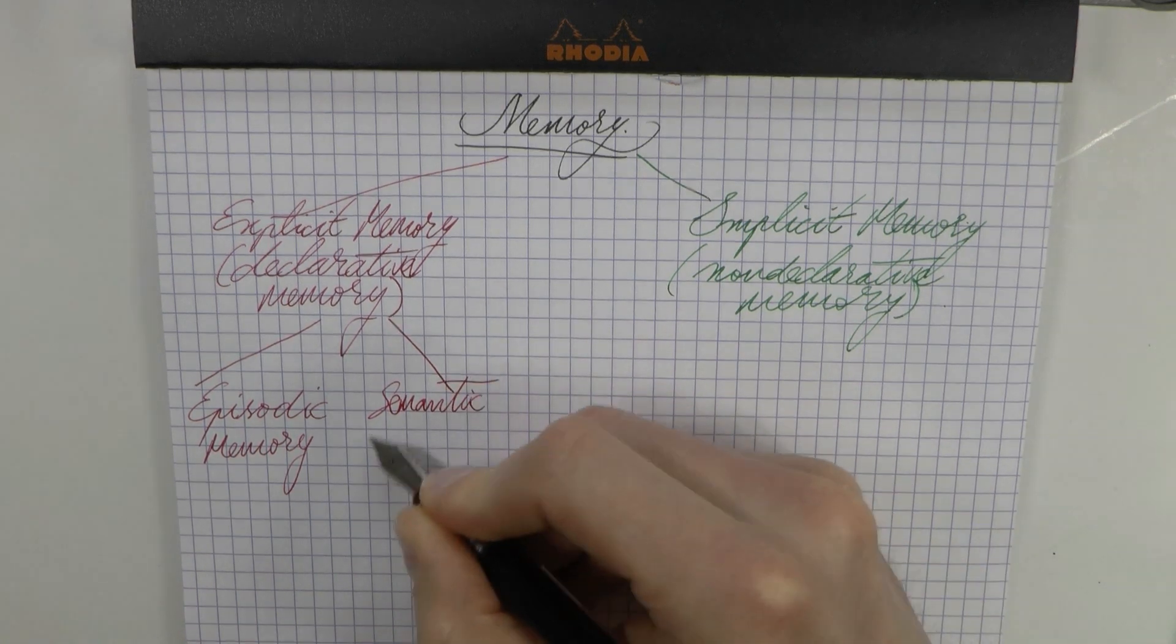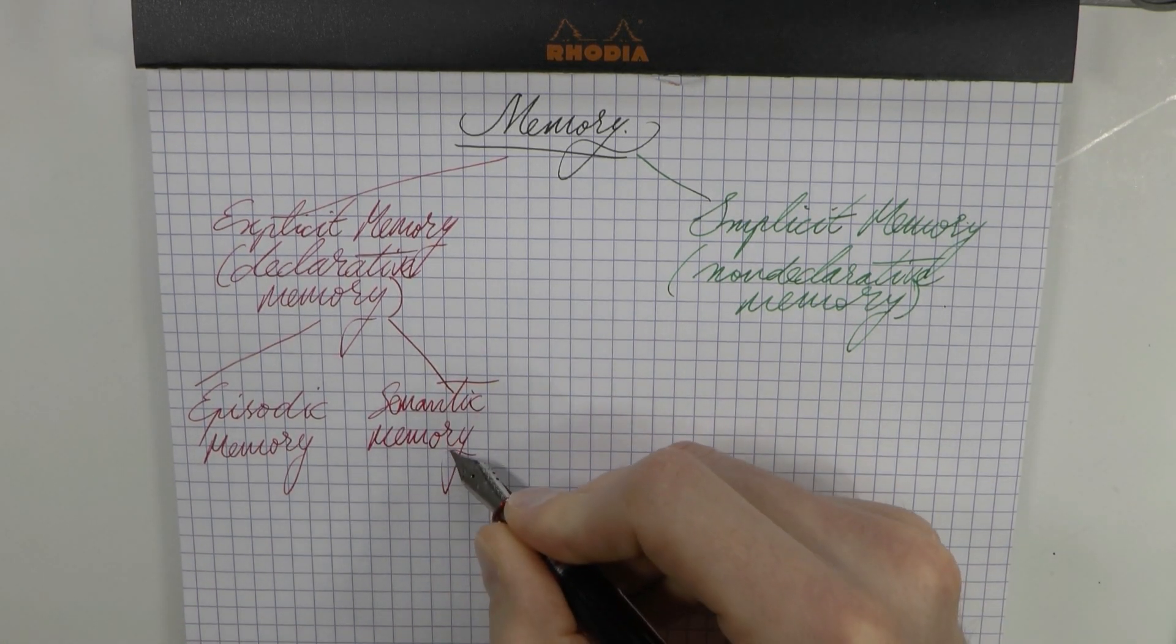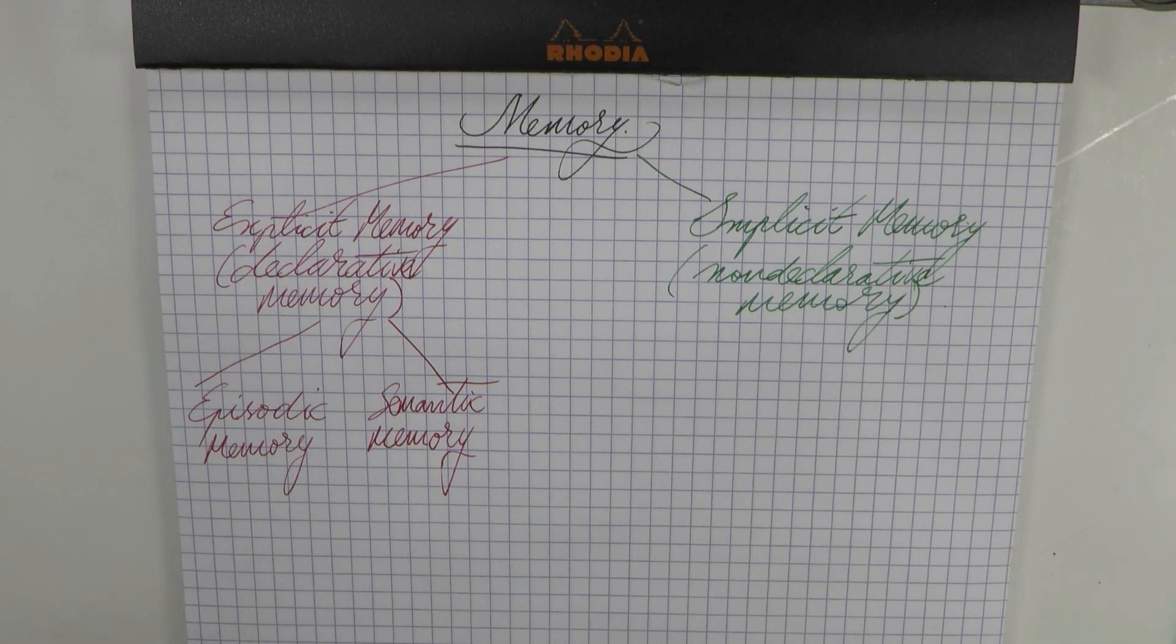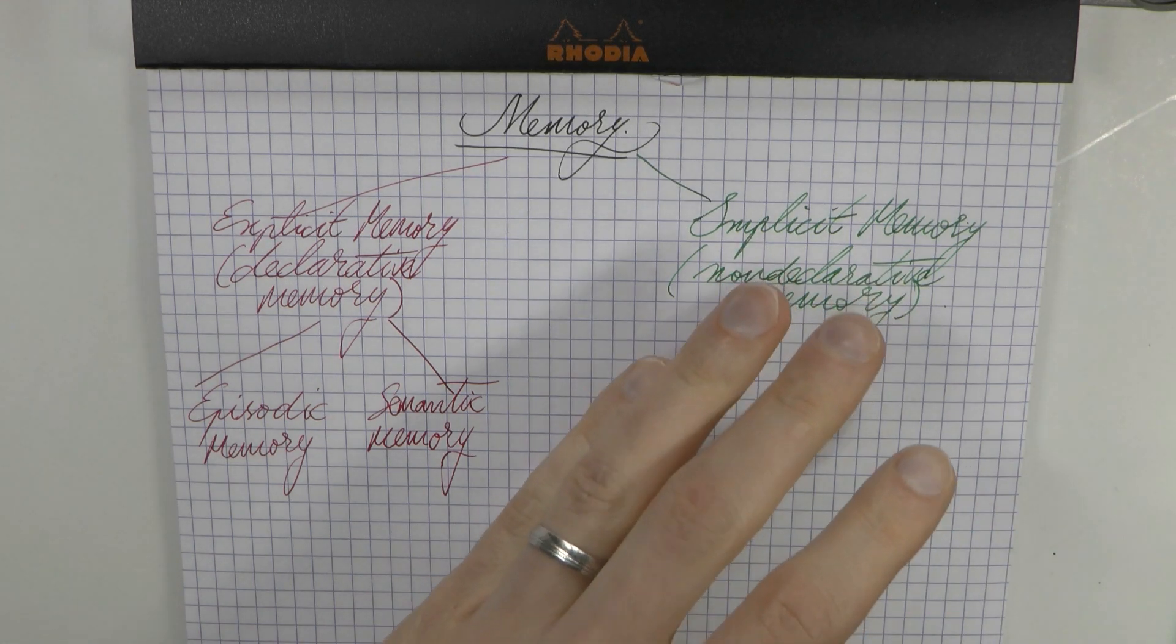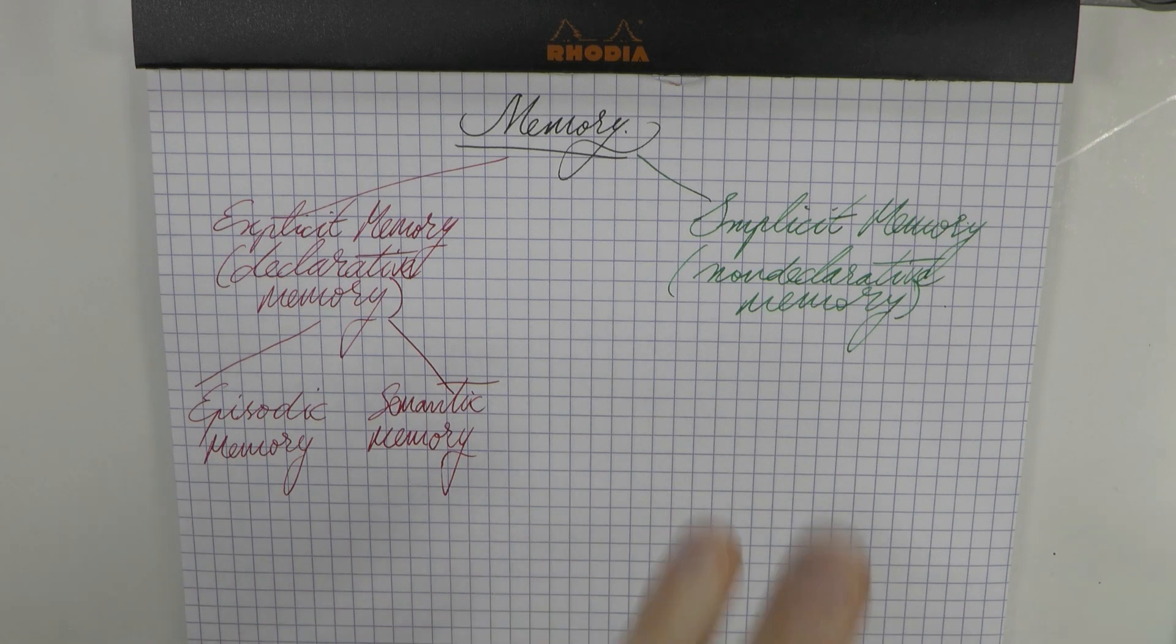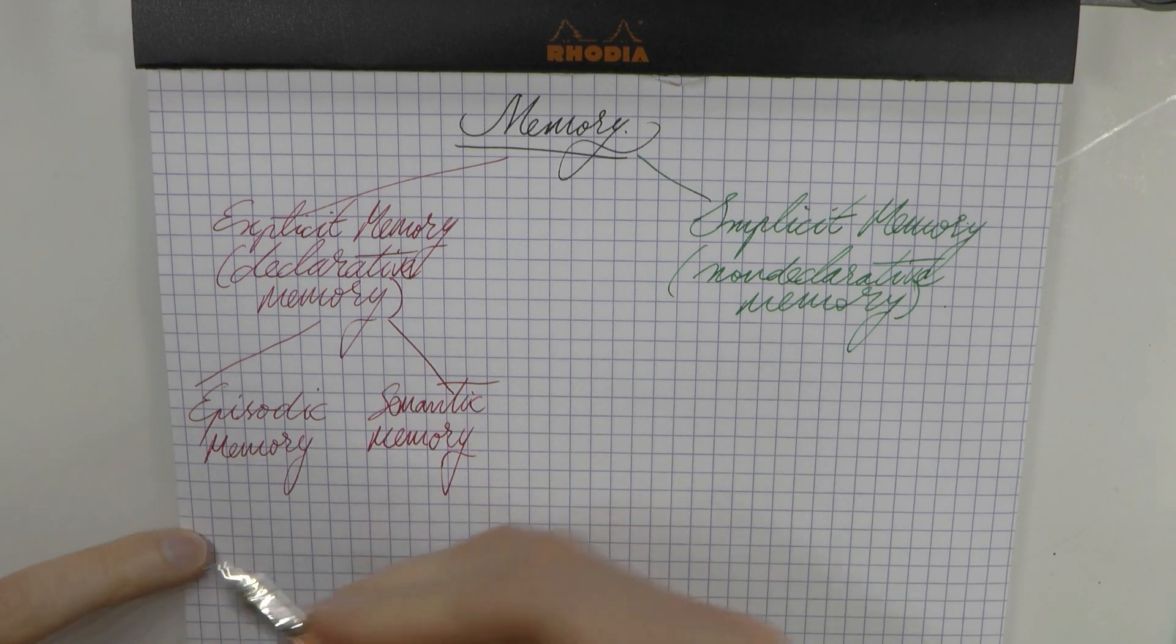But then you also have semantic memory. If episodic memory is your autobiography, then semantic memory is an encyclopedia. You know that the capital of France is Paris—that would be semantic memory. What I would like to do before we get into implicit memory is try and link this immediately on the spot to the brain, because I think that may help you to remember these things a bit better.